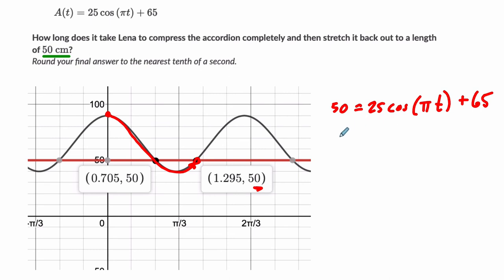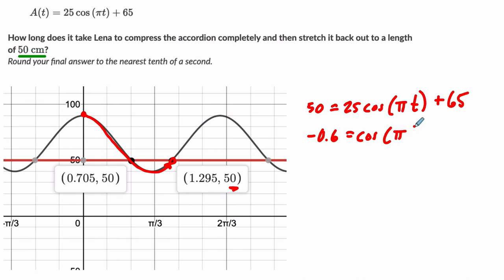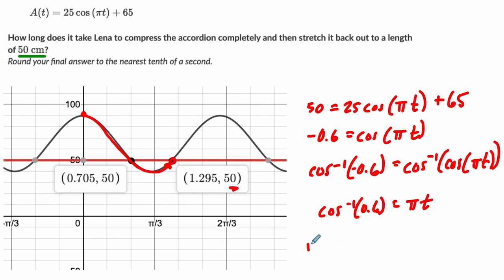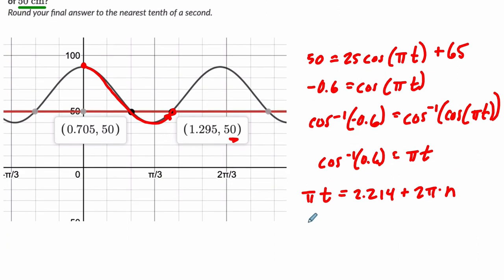We subtract 65 and divide by 25. We get negative 0.6 equals the cosine of πt. We take the inverse cosine of both sides, negative 0.6. That will effectively cancel out our cosine on the right, and we just get πt equals the inverse cosine of negative 0.6. We're going to analyze this now. Here we get πt equals 2.214 about, plus 2π times n, any amount of rotations will get you the same cosine. And that means that t equals, divide everything by π, 2.214 divided by π, which is about 0.7048. And then 2π divided by π is just 2n.